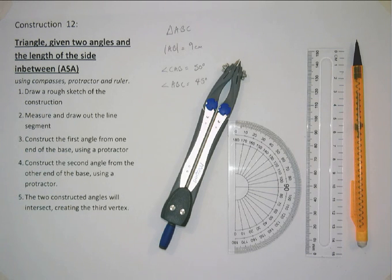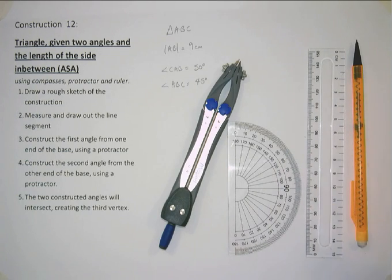Construction 12, constructing a triangle given two angles and the length of the side that's in between those two angles. We're going to use compasses, protractor, ruler and pencil.